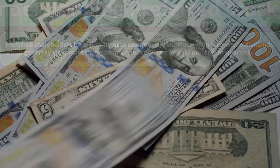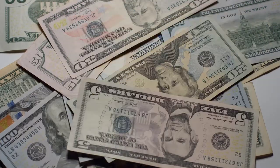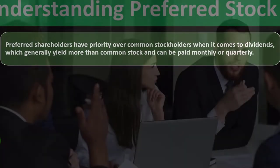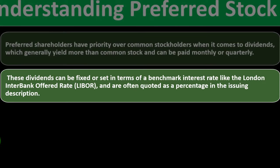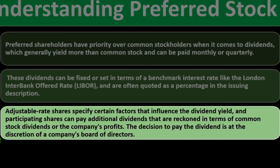The commitment for preferred stocks must be paid before common stockholders — that's why it's preferred. However, it may have more of a limit even if the company's value goes up. Dividends can be fixed or set in terms of a benchmark interest rate, like the London Interbank Offered Rate (LIBOR), and are often quoted as a percentage. Adjustable rate shares specify factors that influence dividend yield, and participating shares can pay additional dividends tied to common stock dividends or company profits. The decision to pay the dividend is at the discretion of the board of directors.